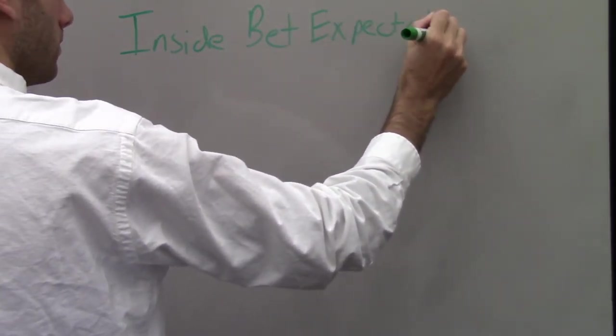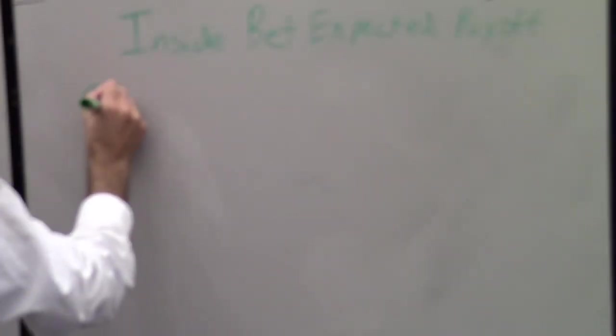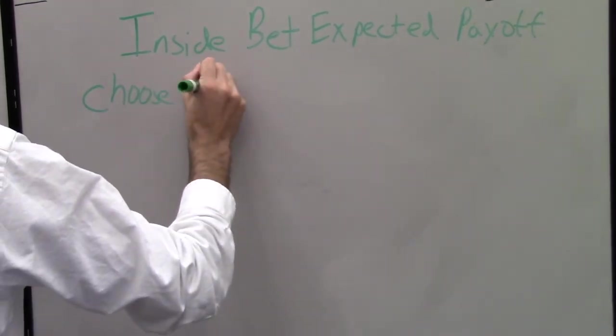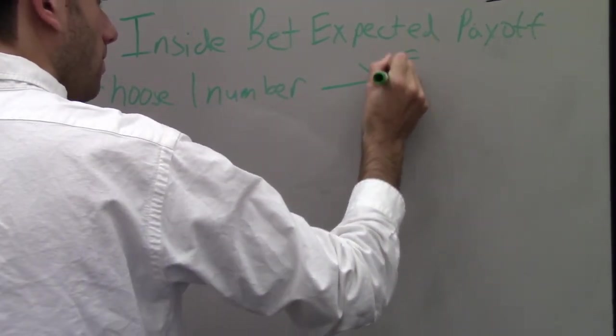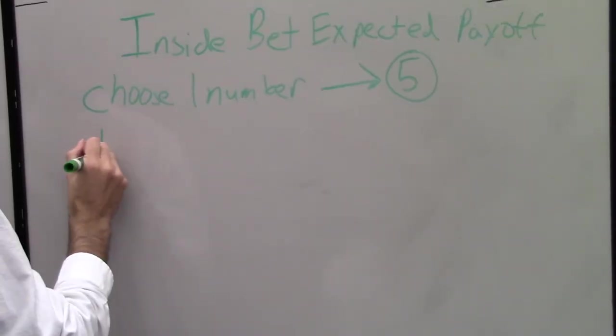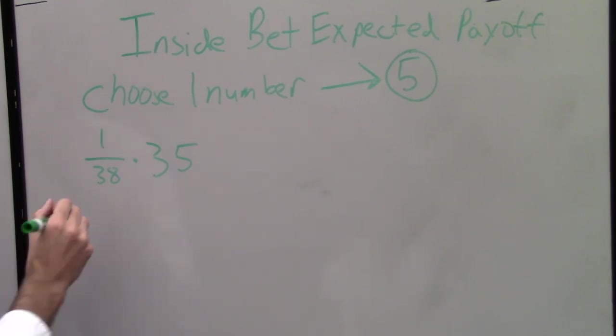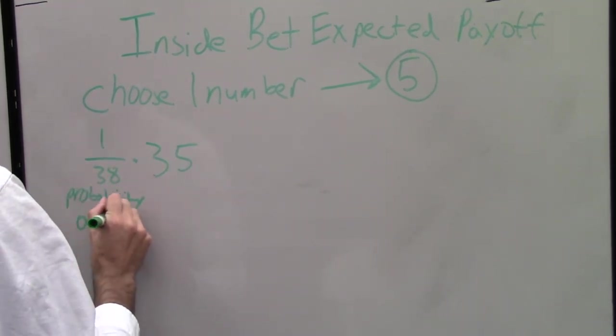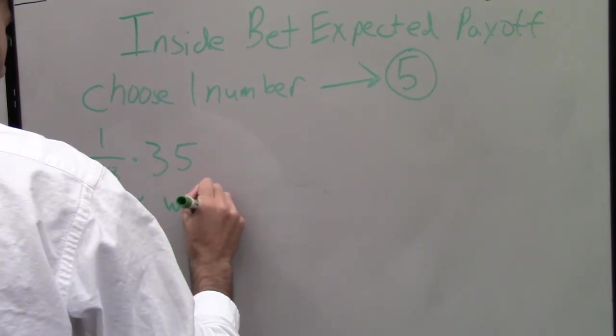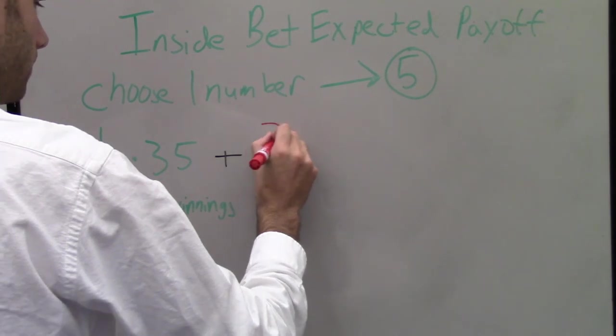Our first example is an inside bet. To keep things simple, we will say the inside minimum is $1 and we can choose one number. We choose the number 5 and bet $1. There are 38 numbers the ball could land on. The probability of landing on 5 is 1 out of 38. We multiply 1 out of 38, the probability of landing on 5, times 35, the payoff of winning.